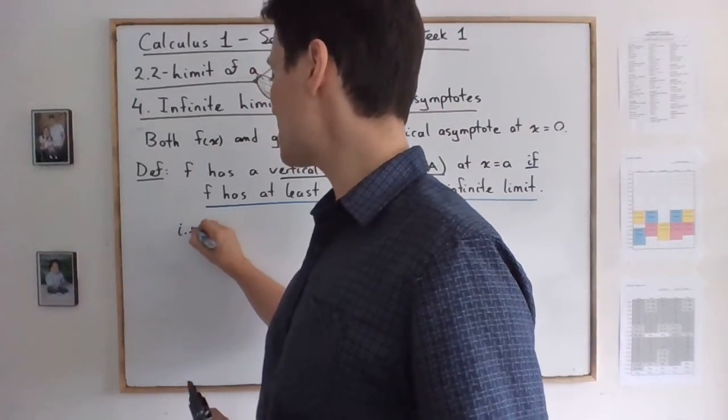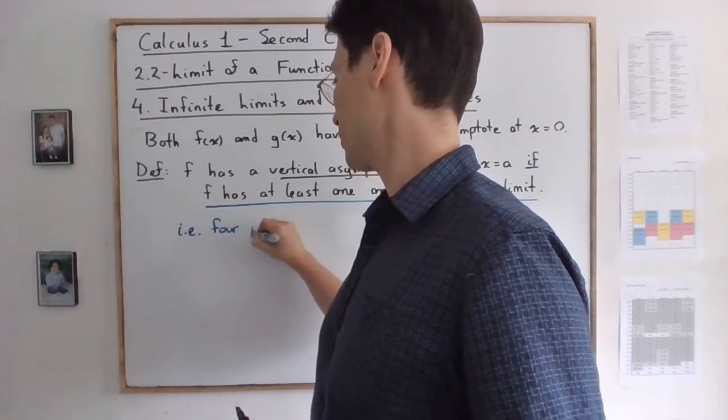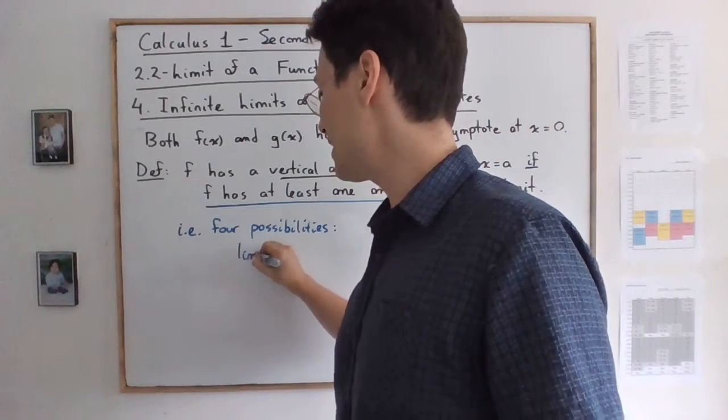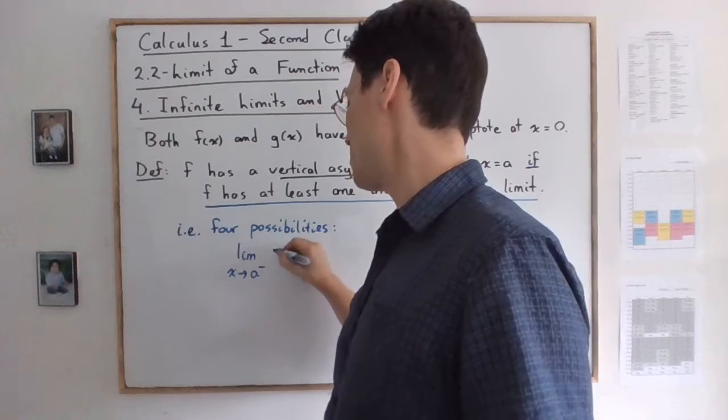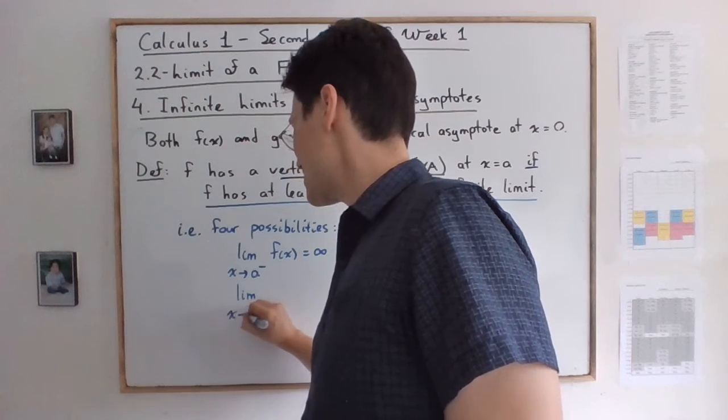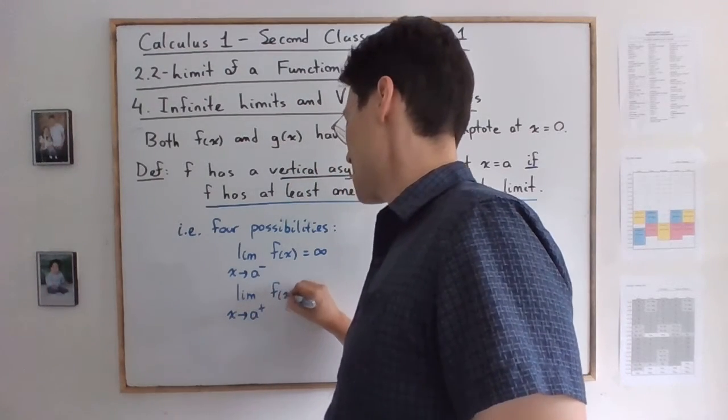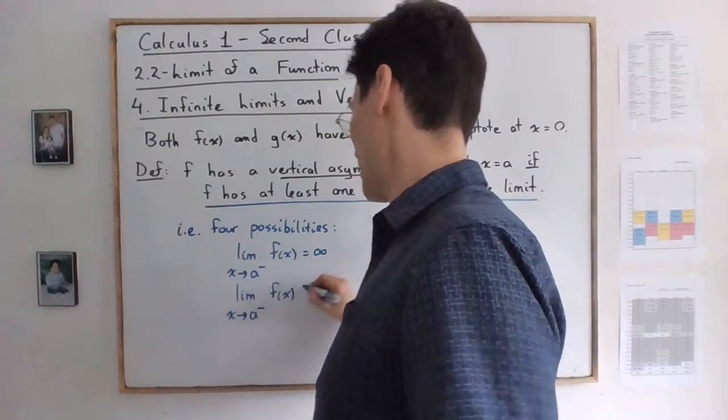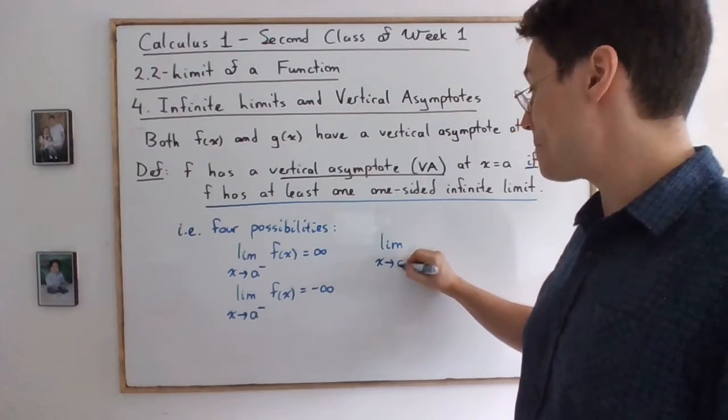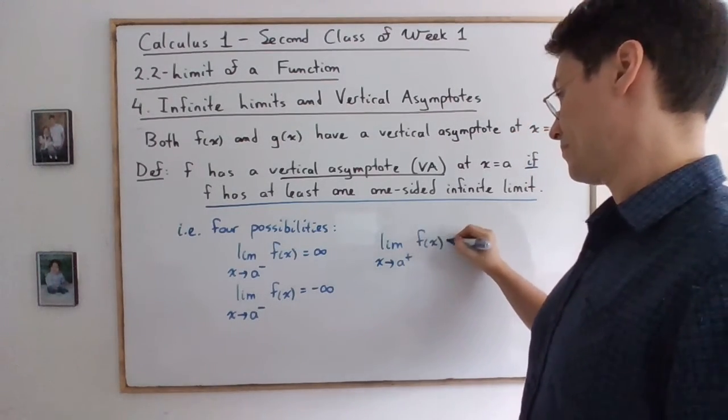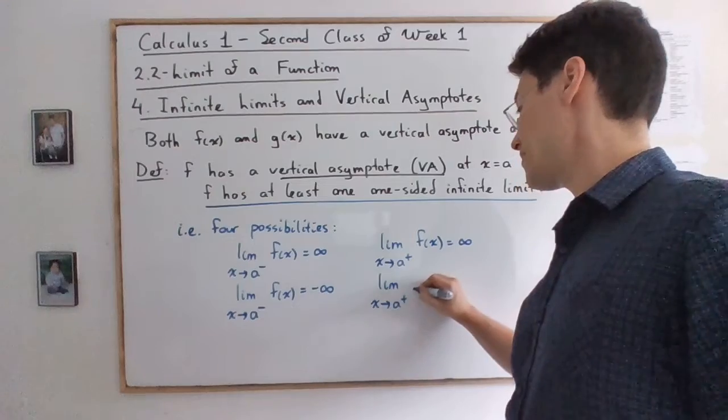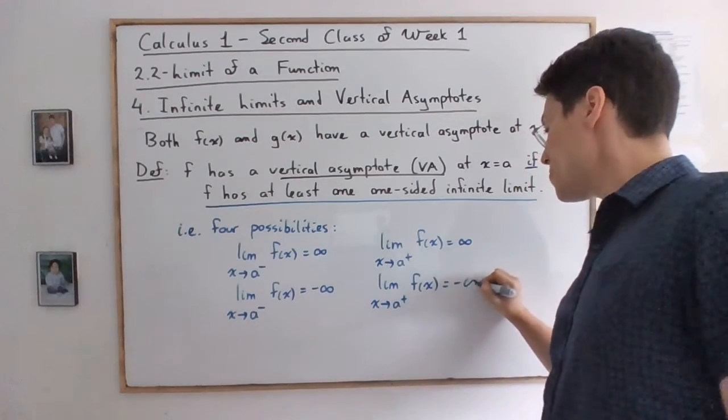So actually, I will tell you there are four possibilities. You could have that the limit as x is approaching a from below of f(x) is infinity, or the limit as x is approaching a from below of f(x) is equal to negative infinity. But you could also have the same behavior from above.